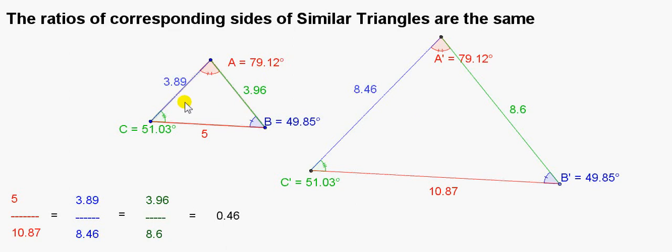Similar triangles are triangles that have the same angles. So for example, this angle up here is called angle A. It's equal to this angle over here in the second triangle, which I'm calling A prime.